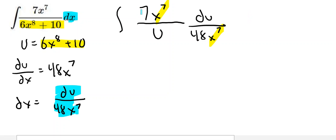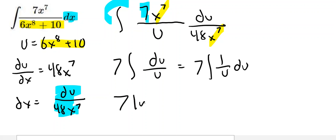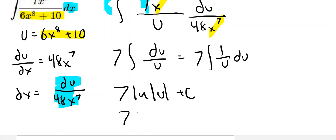We can also bring the 7 out in front, so I will have 7 times the integral of du over u, which is the same as 7 times the integral of 1 over u du, which is our log rule for antiderivatives. This becomes 7 times the natural log of the absolute value of u, plus c. Then we can substitute back in what u is equal to, 6x^8 plus 10, plus c.